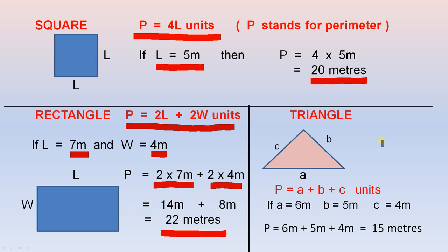If A equals 6 meters, B equals 5 meters, and C equals 4 meters, to obtain the perimeter, you add those 3 lengths together, and the answer is 15 meters.